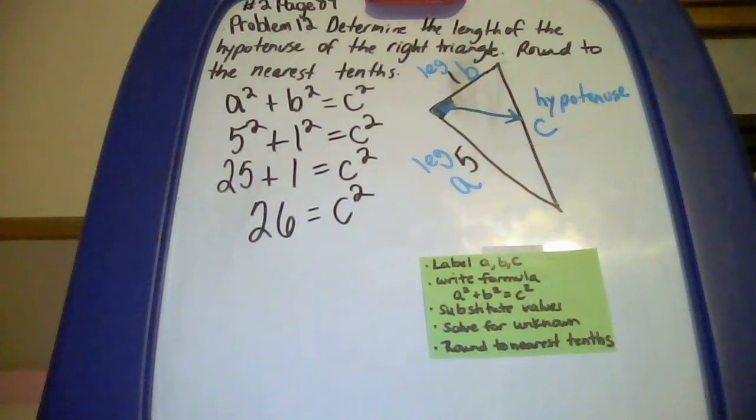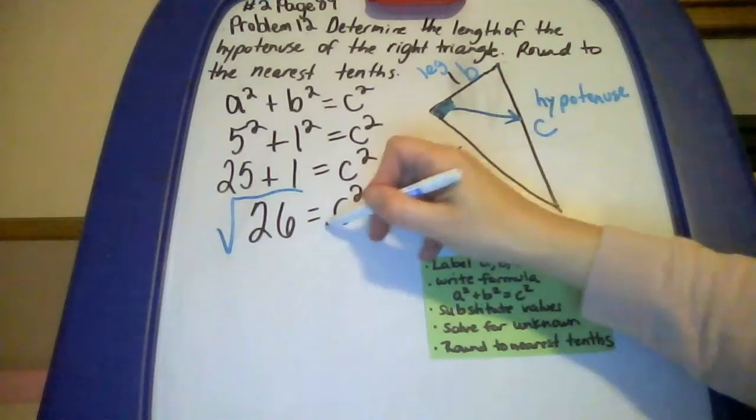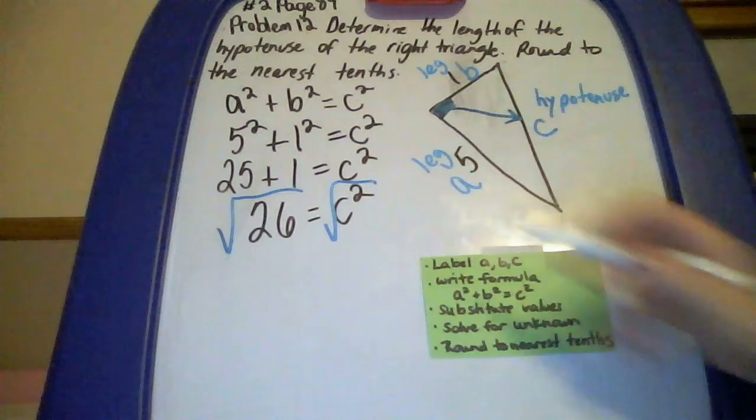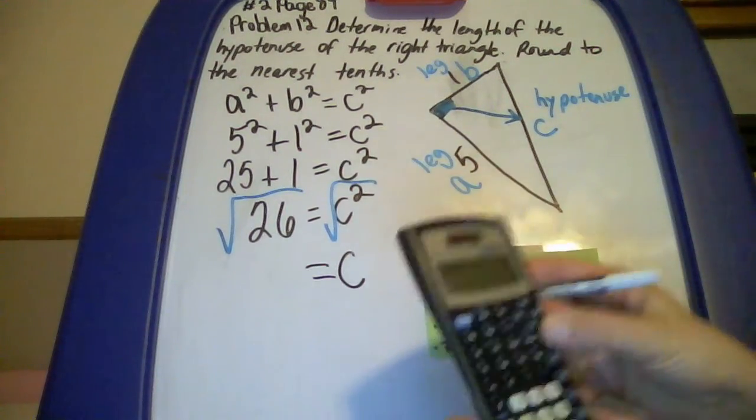And then your next step, you're going to take the square root of both sides. So the square root of 26 and the square root of C squared. The square root of C squared is just C. The square root of 26, we need our calculator.